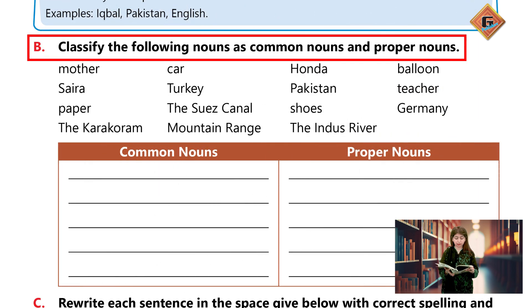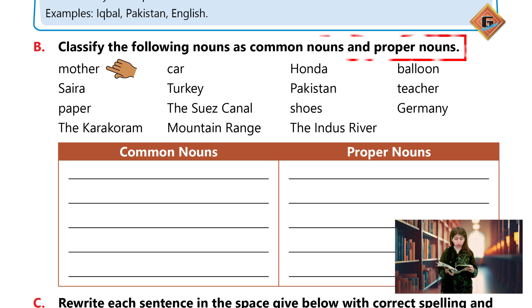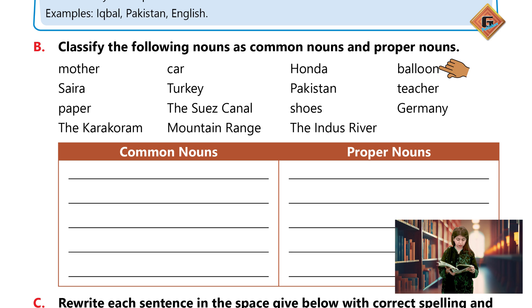Railway. Now classify the following nouns as common noun and proper noun. Common nouns kaunse hain: mother, paper, car, shoes, balloon.